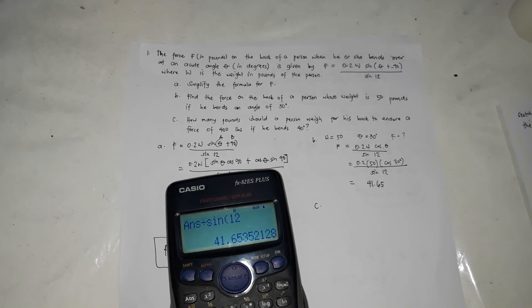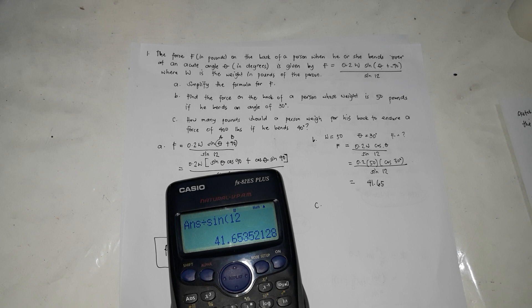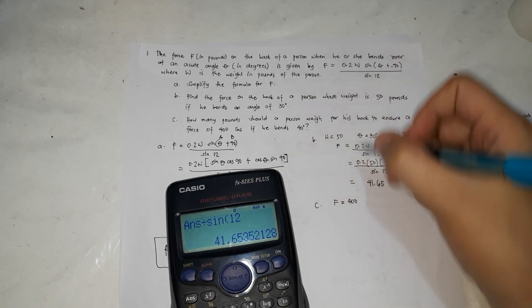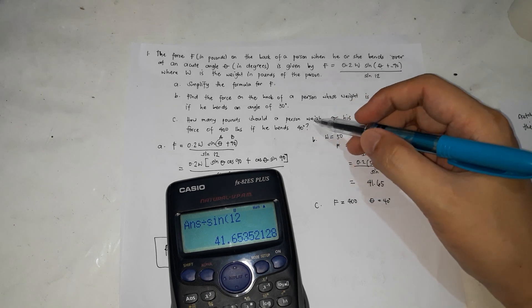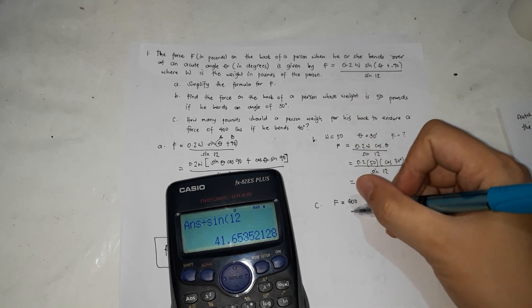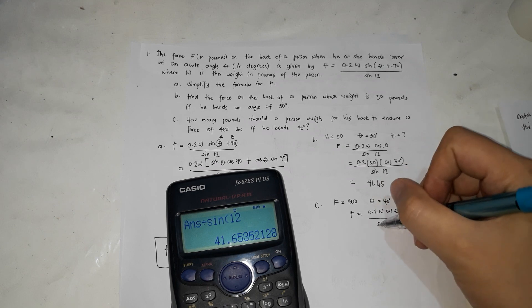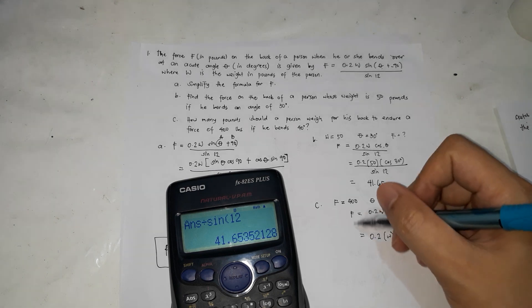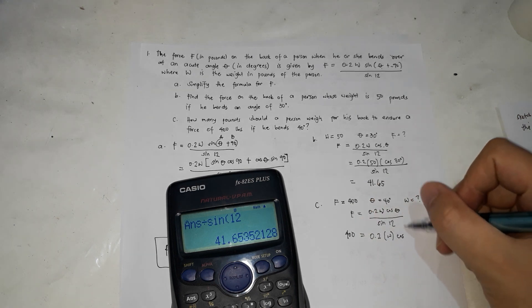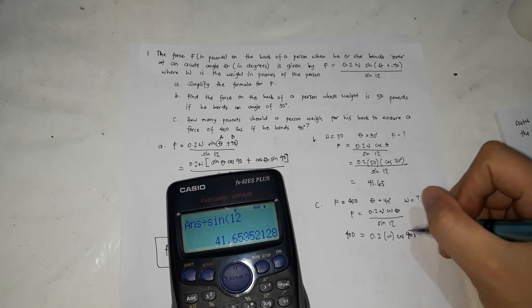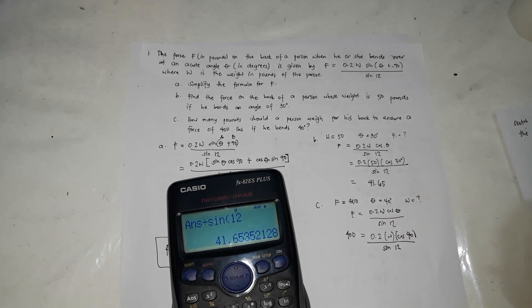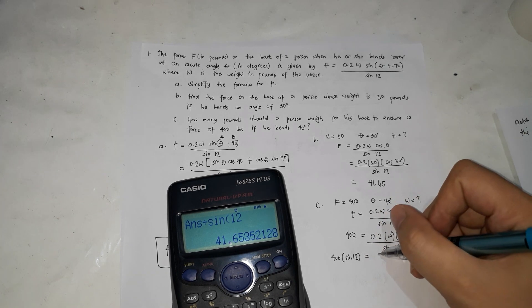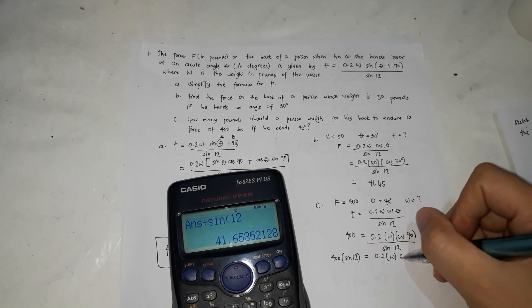For letter C, how many pounds should the person weigh? So we're looking for the weight. The formula is F equals 0.2W cosine theta over sine 12. So 400 equals 0.2W cosine 40 over sine 12. This becomes 400 times sine 12 equals 0.2W cosine 40.